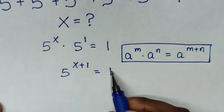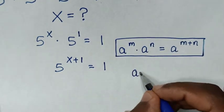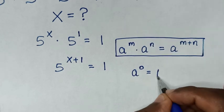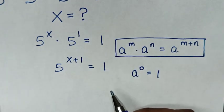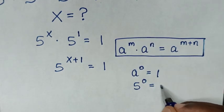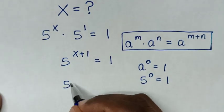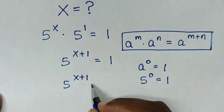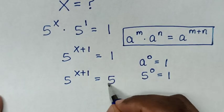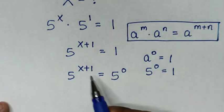In the next step, we make this 1 have the same base of 5 by applying the rule a power of 0 is equal to 1. So 1 is written as 5 power of 0. Our equation becomes 5 power of x plus 1 is equal to 5 power of 0. Since we have the same base, we compare the powers.